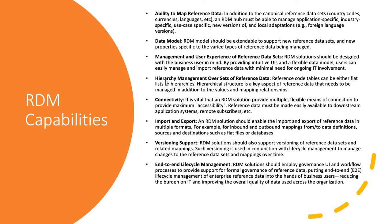The fourth capability is support for different hierarchies of similar reference data. Reference code tables can be either flat lists or hierarchical structures — and hierarchical structure is a key aspect of reference data management in addition to values, mappings, and relationships. You could have a country, counties, and cities hierarchy, or a hierarchy showing enterprise-level categories, all their values, and mappings across different systems. It depends on your business requirements.